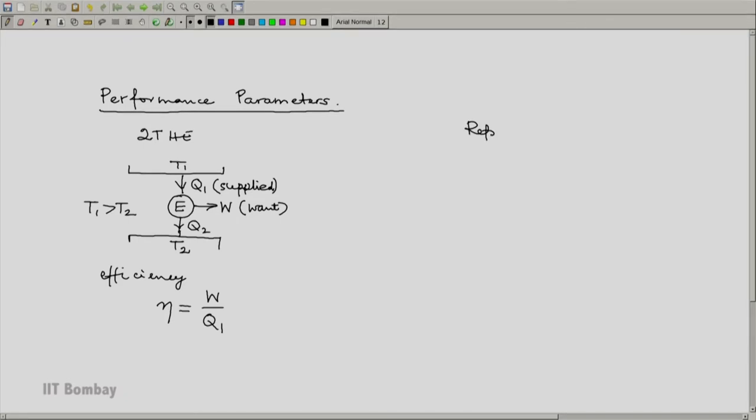When it comes to a refrigerator, and what I am going to show is a refrigerator which you may call a 2T refrigerator, we need to extract Q2 from the low temperature system at T2. We have to provide work—this is what is supplied. And of course, Q1, which should by first law equal Q2 plus W, will be rejected to T1.